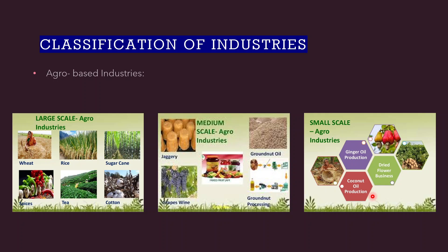Now let us understand how the classification of industries is done. Industries are classified on the basis of the source of raw materials used, their size, their ownership, and the nature of the end products. The first category is agro-based industries. These industries obtain their raw materials from agriculture, primarily from plants. Cotton, jute, sugar, and food processing industries are included in agro-based industries.